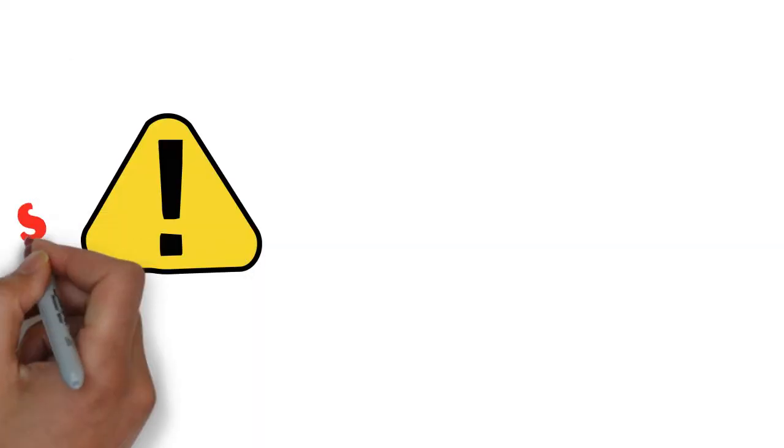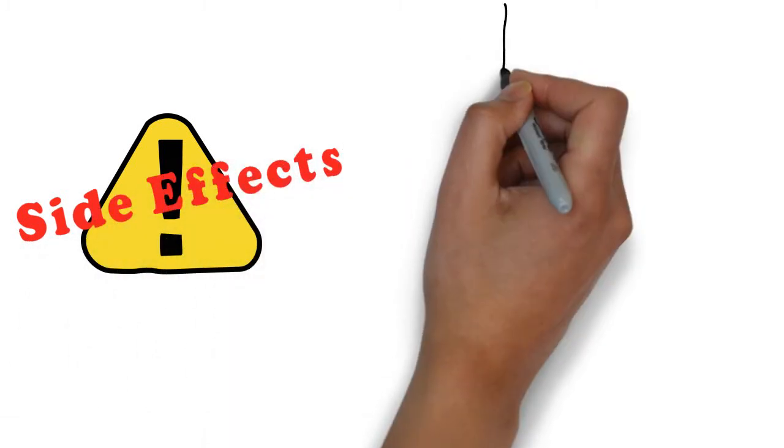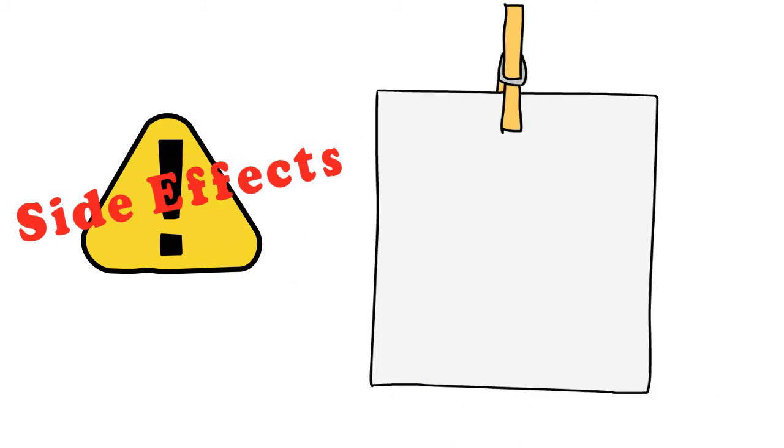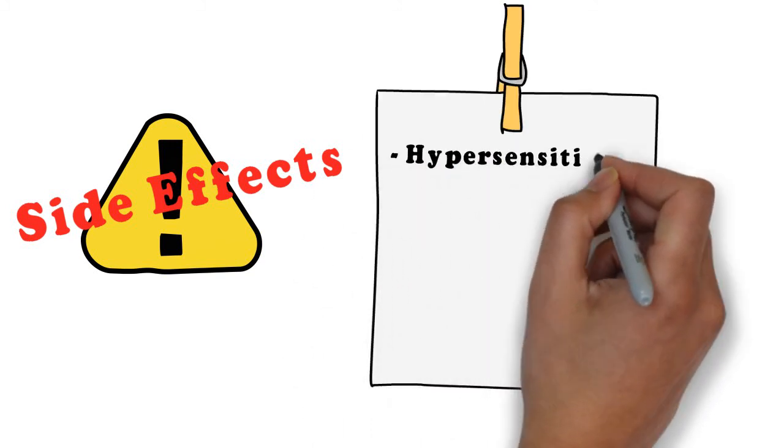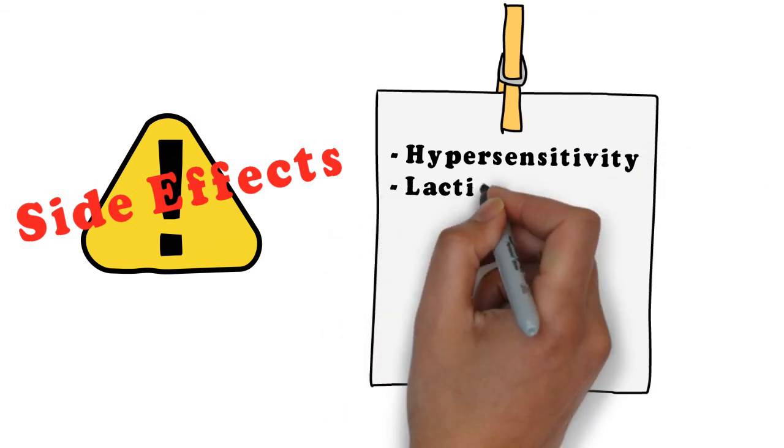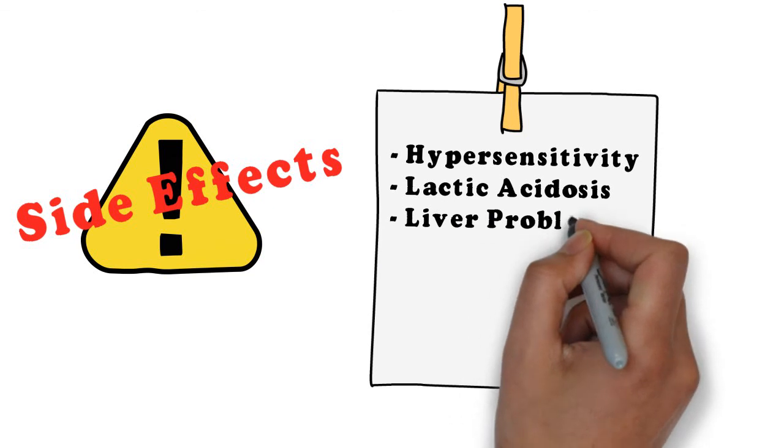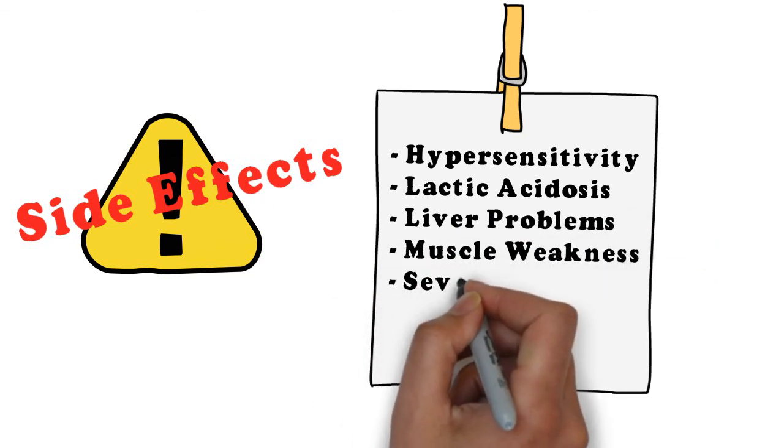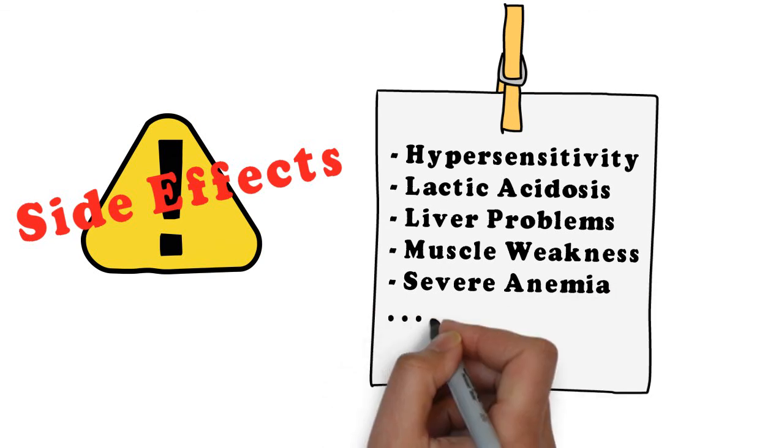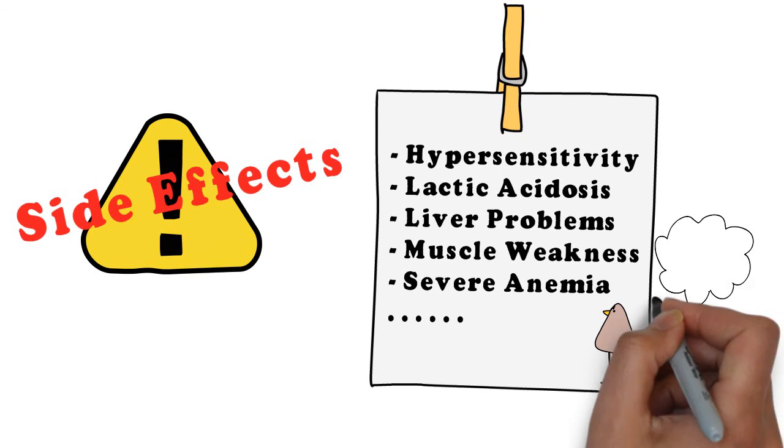While zidovudine was the first antiretroviral used, it inevitably came with many side effects and early on toxicity was a huge issue. These included lactic acidosis, liver problems, and muscle weakness. It's interesting to note that most of these side effects are metabolic issues, and this is largely due to AZT being incorporated by the mitochondrial DNA polymerases, having severe consequences on the mitochondria's DNA replication.